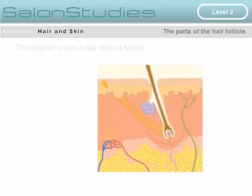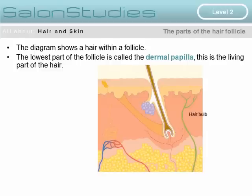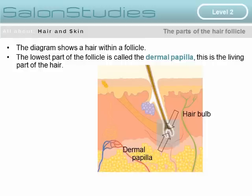The parts of the hair follicle. The diagram shows a hair within a follicle. Looking more closely, the lowest part of the follicle is called the dermal papilla, which is the living, active part of the hair. You can see this highlighted in the diagram with two arrows close to each other indicating the hair bulb and dermal papilla.